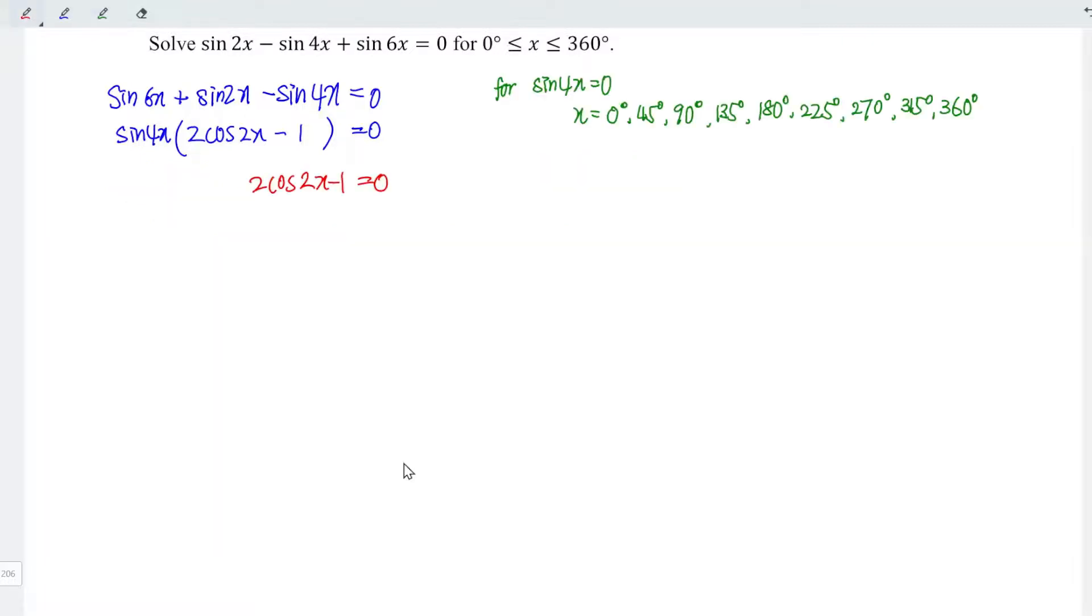Let's solve for the second equation. If 2 cos 2x minus 1 equals zero, which means that cos 2x equals positive 1 over 2, and 2x equals arccos 1 over 2, and this is equal to 60 degrees.